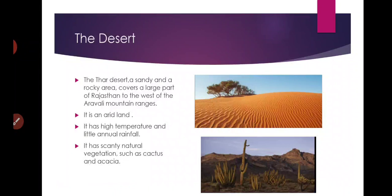The Thar Desert lies to the west of the Aravali mountain ranges, which we discussed in our last video. Aravali mountain se west side mein Thar Desert hai. It is an arid land. It has high temperature and little annual rainfall — yahan ka rainfall bahut kam hai.